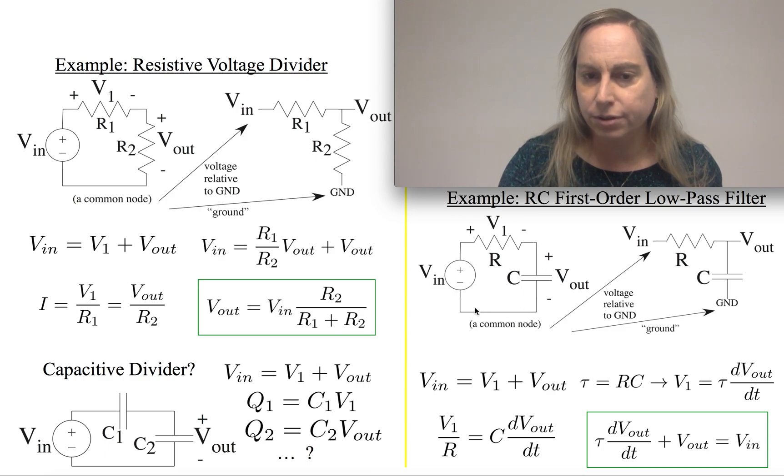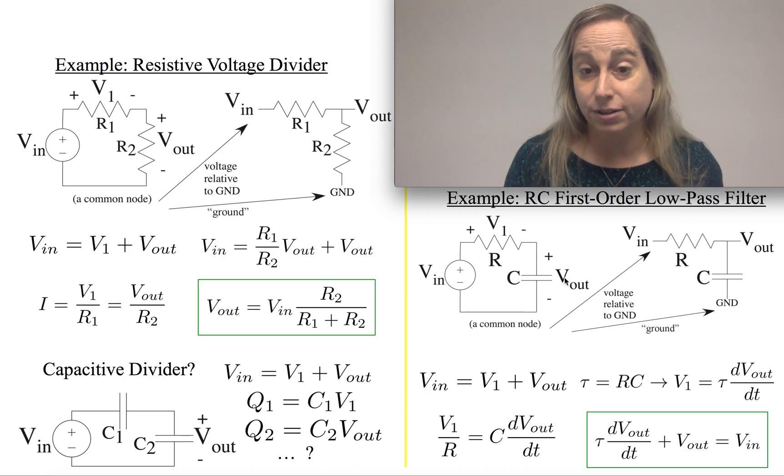There's only one effective current running through the loop. And that current means that the current that would be V over R, V1 over R, is the current that's going through here, which is then C times the derivative of Vout over dt.